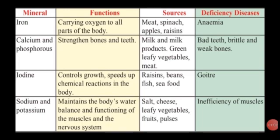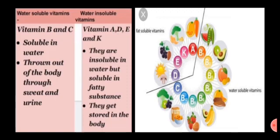Iodine controls growth and speeds up chemical reactions in the body; sources are raisins, beans, fish, and seafood; deficiency disease is goiter. Sodium and potassium maintain the body's water balance and functioning of the muscles and nervous system; sources are salt, cheese, leafy vegetables, and fruits; deficiency causes inefficiency of muscles. Vitamins B and C are water-soluble vitamins — they dissolve easily in water and are thrown out of the body through sweat and urine, so a regular supply is essential.